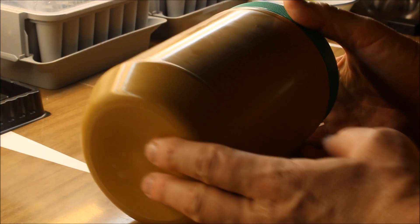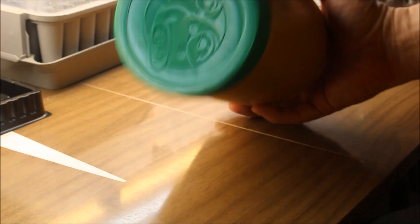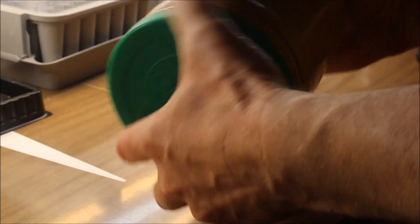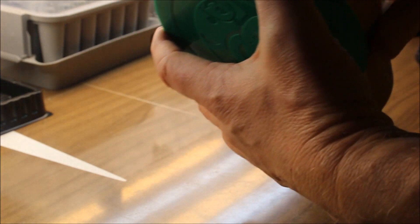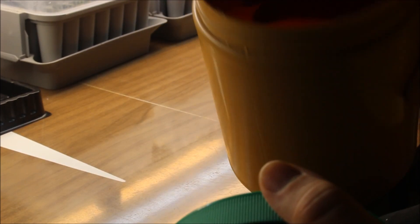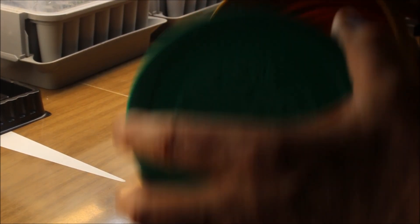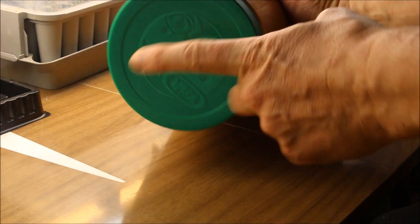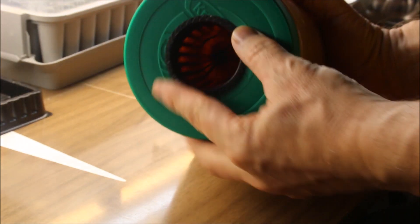Now the container I'm going to use is just an old peanut butter jar. I like using these because they're fairly dark on the inside for my purposes. So all you need to do is drill yourself a hole in the top. Just going to make sure you cut a hole that's big enough to accept a net pot.